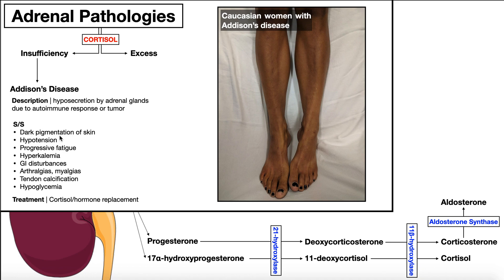The signs and symptoms of Addison's disease: the first is dark pigmentation of the skin — a Caucasian woman with Addison's disease will show skin much darker than expected. There's also hypotension. Cortisol is the chronic stress hormone, and if we think of stress we think of higher heart rate and higher blood pressure, so an insufficiency of cortisol leads to lower blood pressure. There may also be progressive fatigue because one normal function of cortisol is to spare blood glucose for the brain, so with low cortisol there's less energy available and the person experiences fatigue.